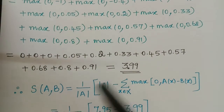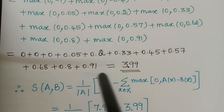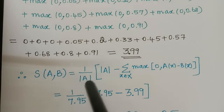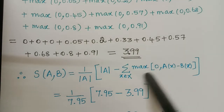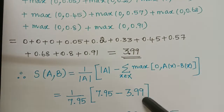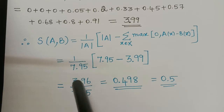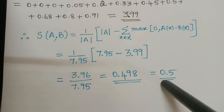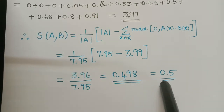Now we substitute into the formula. The degree of subsethood S(A, B) = (1/|A|) × (|A| - Σ max(0, A(x) - B(x))). Substituting |A| = 7.95 and the summation = 3.99: 7.95 - 3.99 = 3.96, and 3.96 / 7.95 = 0.498 ≈ 0.5. Therefore the degree of subsethood of A in B is equal to 0.5.